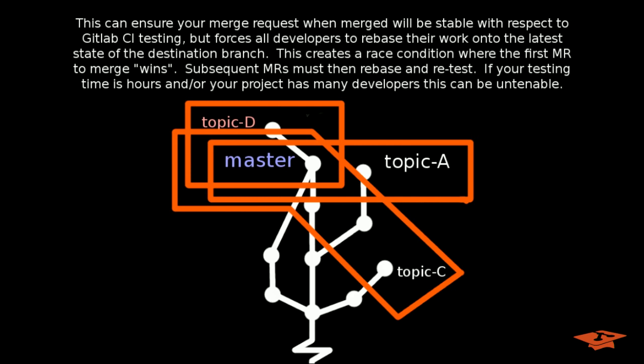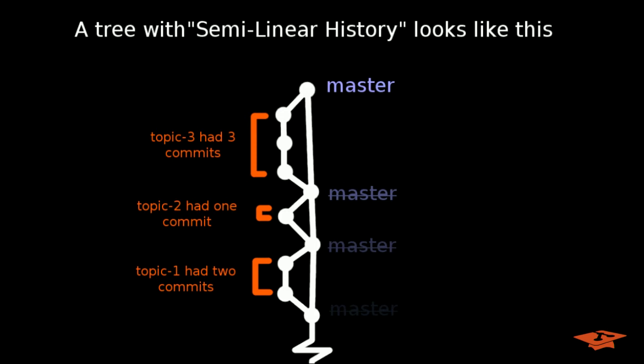This actually ends up creating a race condition where the first merge request to merge wins, and subsequent MRs must then rebase and retest over and over until their stuff gets in. This can be a big deal or potentially not a big deal depending on your project, but if your testing time takes several hours or you have a whole bunch of developers that are all doing work at the same time, this type of workflow could be untenable.